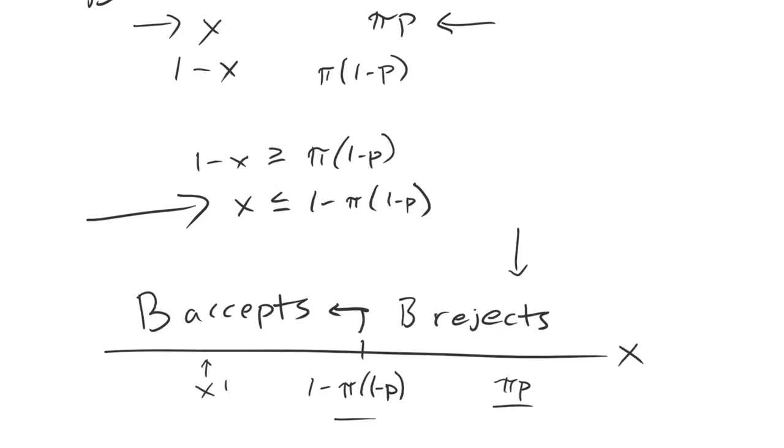But notice that A could deviate by demanding epsilon more. And if it does that, B still accepts, and now A is getting strictly more because it's demanding more, and it's still having an accepted offer.